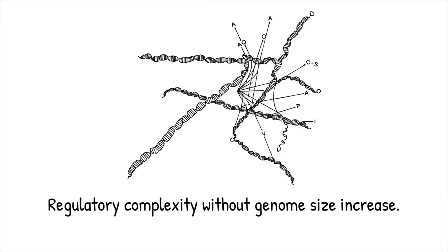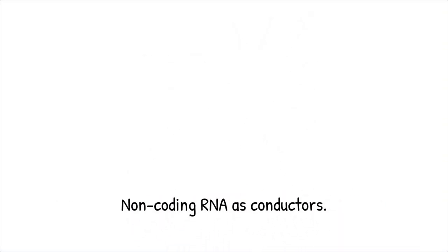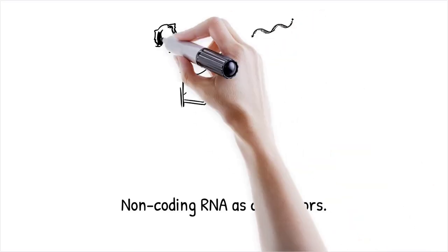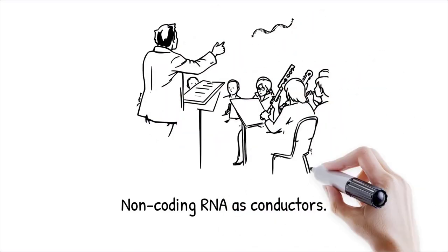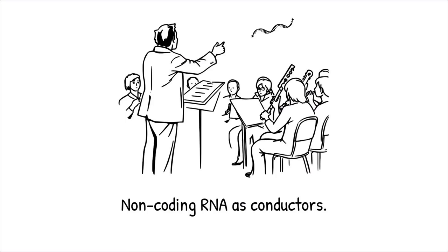MicroRNAs can regulate hundreds of target genes by binding to messenger RNAs (mRNAs) and preventing their translation, enabling sophisticated control over cellular functions. It's like a single conductor managing an entire orchestra — small interventions at key points create harmony across multiple components.